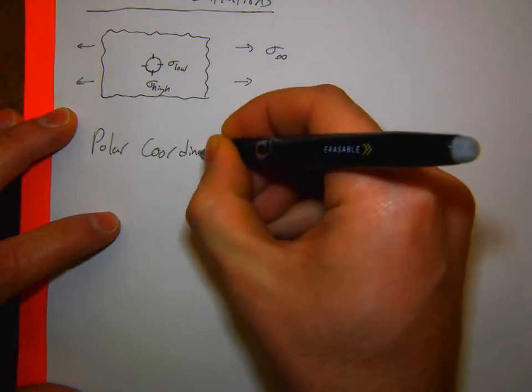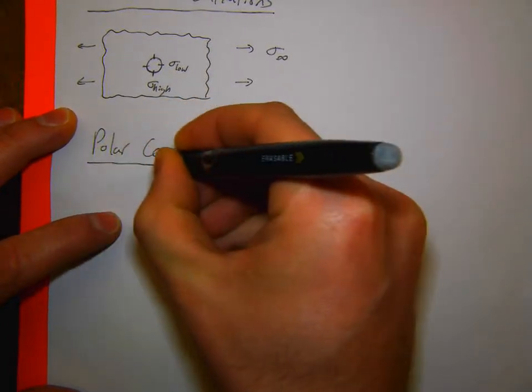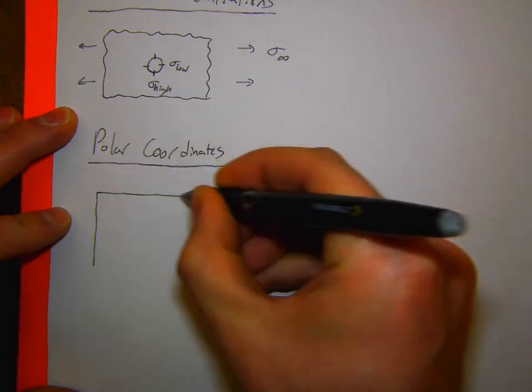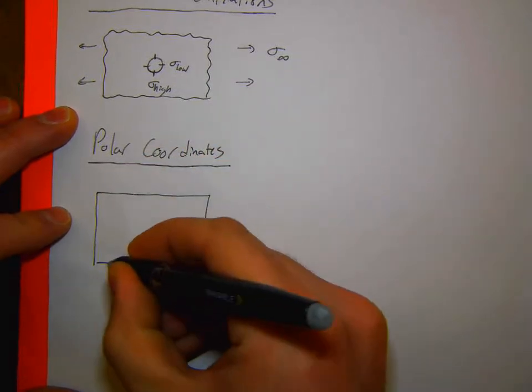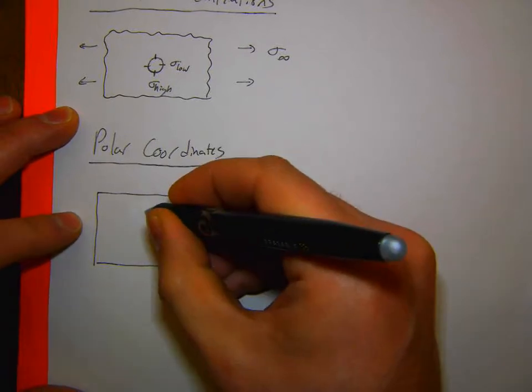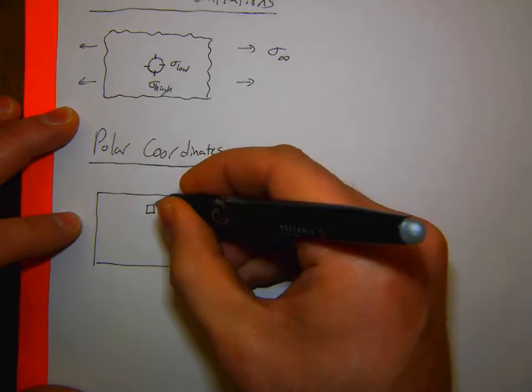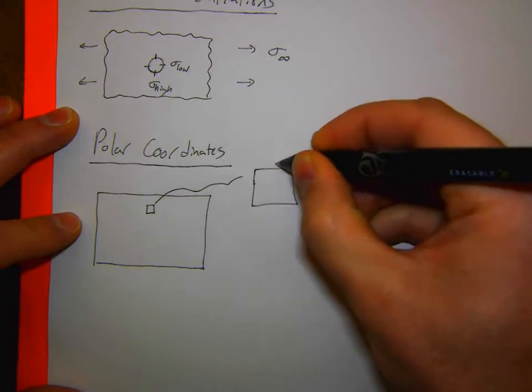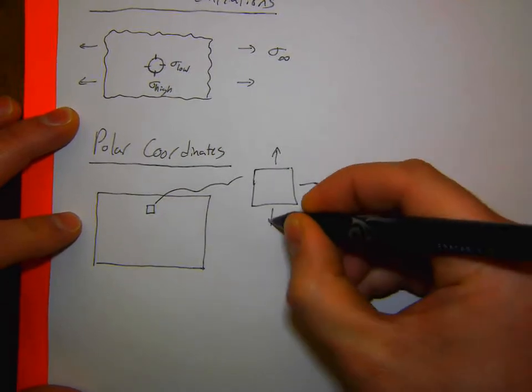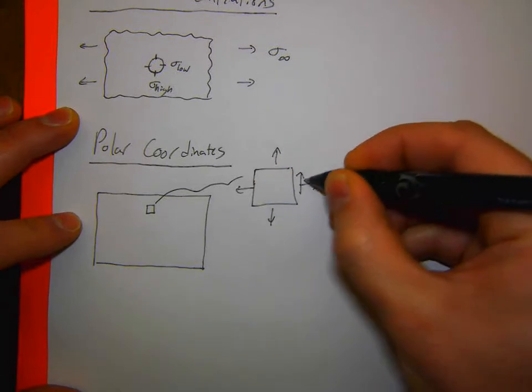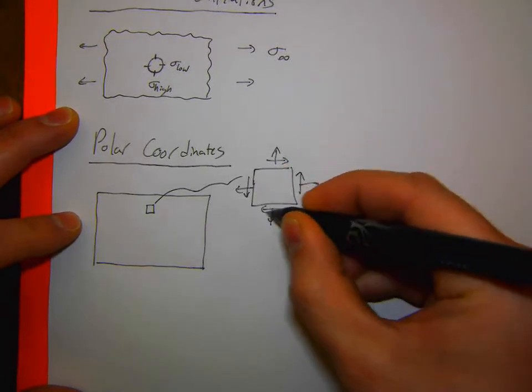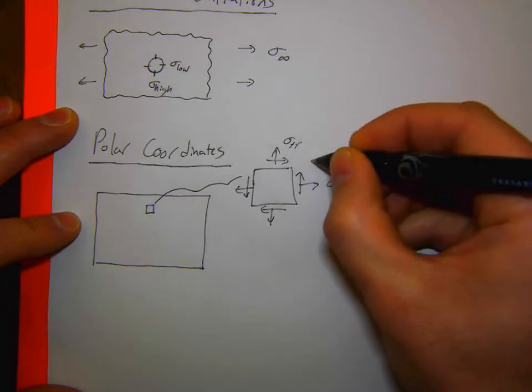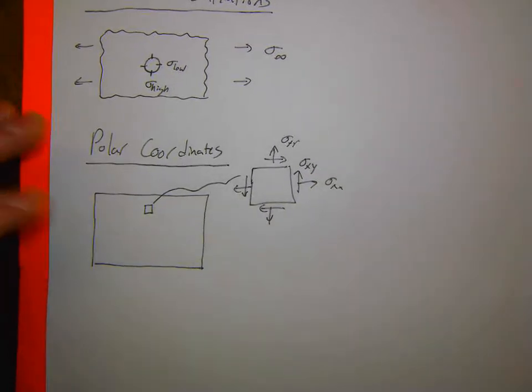Polar coordinates. So, before, when we had been looking at stress in a body, we'd been taking it in a Cartesian sense. We'd been taking a block of stuff in here and looking at that block, we had stress in the X, stress in the Y, shear, shear, so, sigma X, sigma Y, sigma XY.